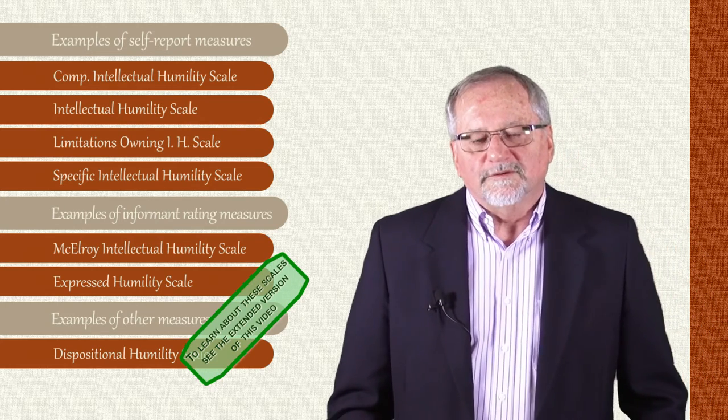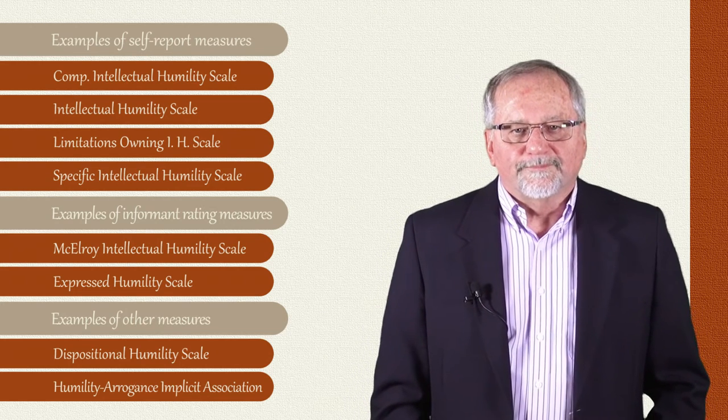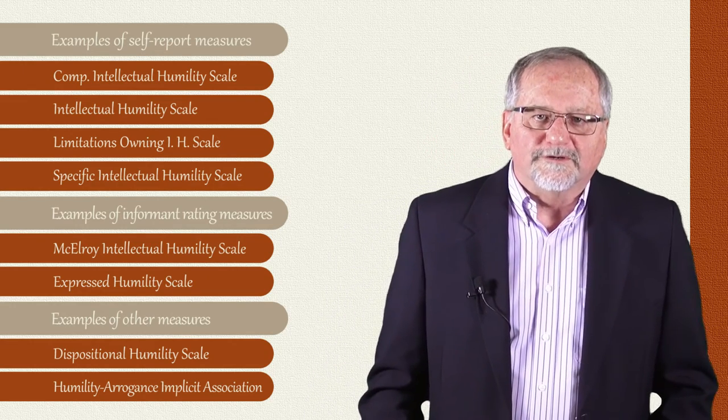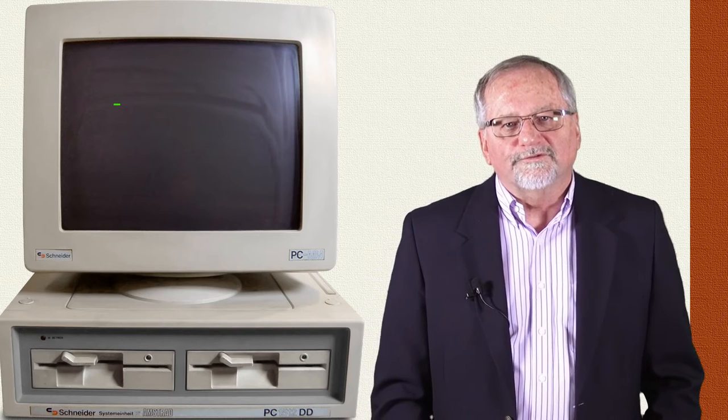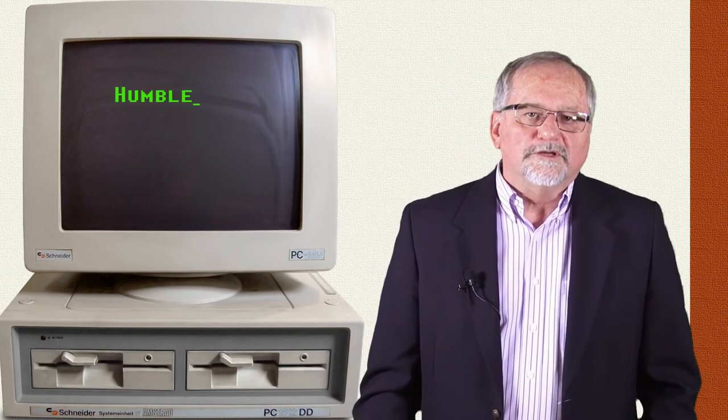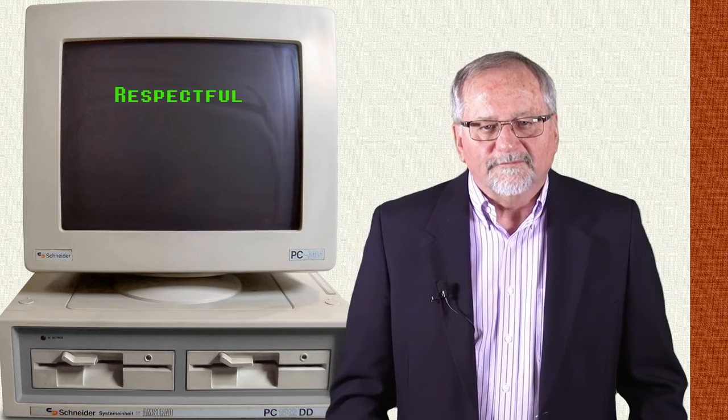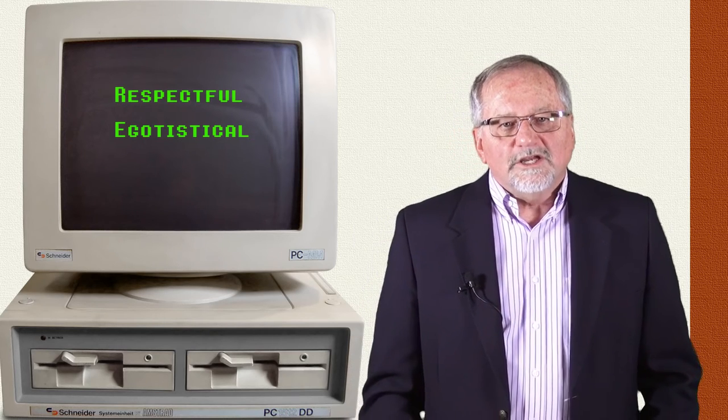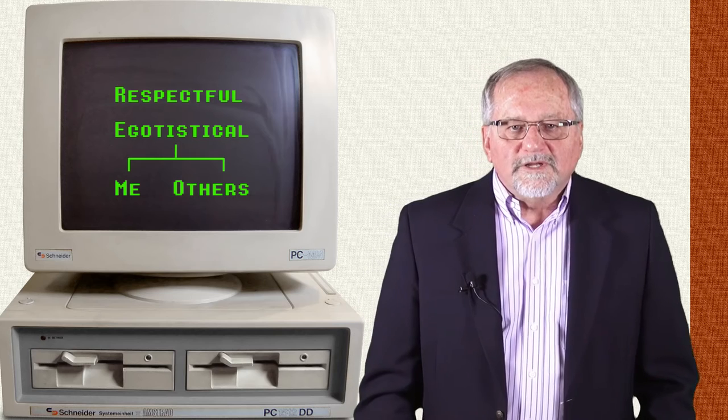There have been some other attempts to provide measures of humility and intellectual humility that do not rely upon other reports. The final attempt at measuring humility that we'll talk about is called the Humility Arrogance Implicit Association Test. The Humility Arrogance Implicit Association Test provides yet another alternative for measuring humility. Using computer administration, participants are shown single-word attributes related to humility. For example, on the computer, you might just see the word humble, or you might see the word respectful. And then you will also see words that are related to arrogance. For example, you might see single words such as egotistical, or conceited, or closed-minded.